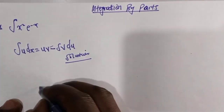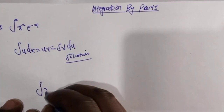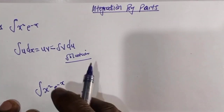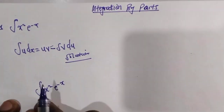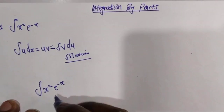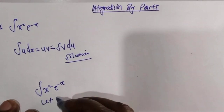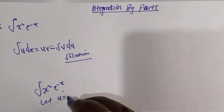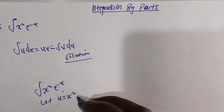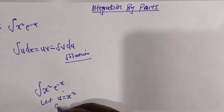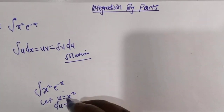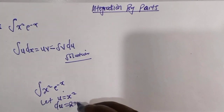We have the question x squared e to the power minus x, and we have to integrate this by parts. First of all, we let u equal the first function, which is x squared. When you differentiate this with respect to x, du equals 2x dx.